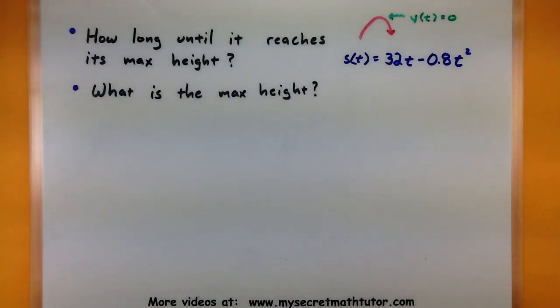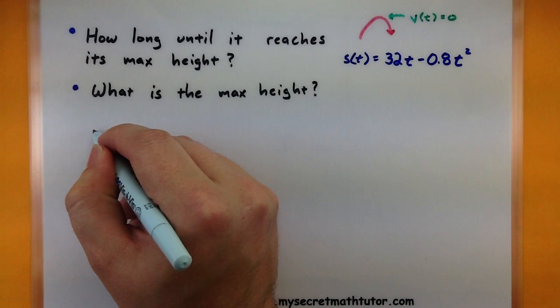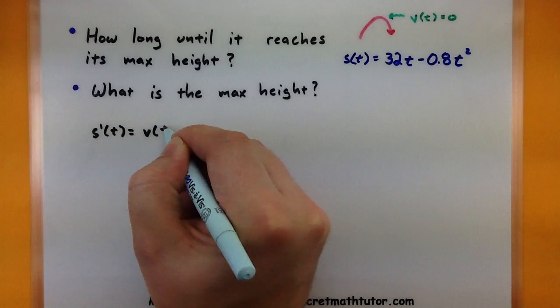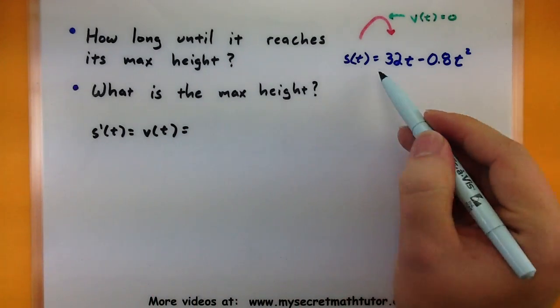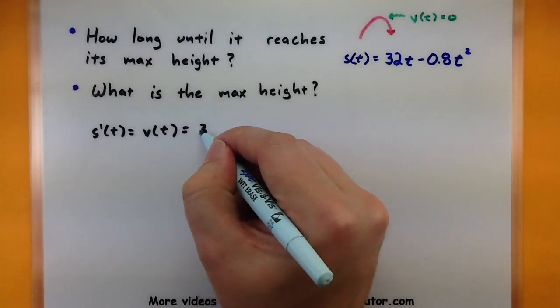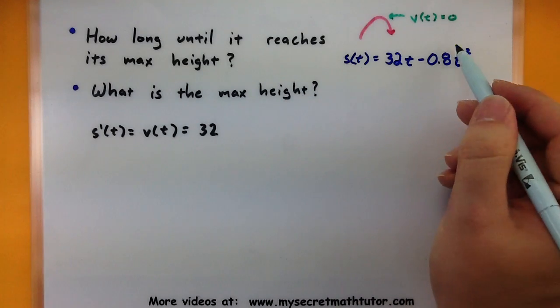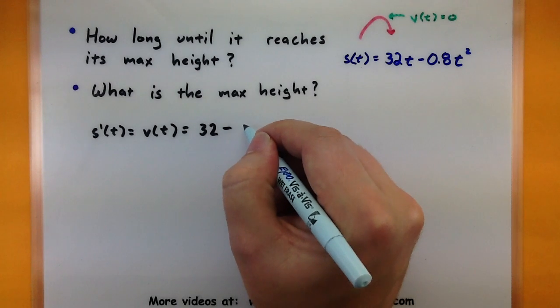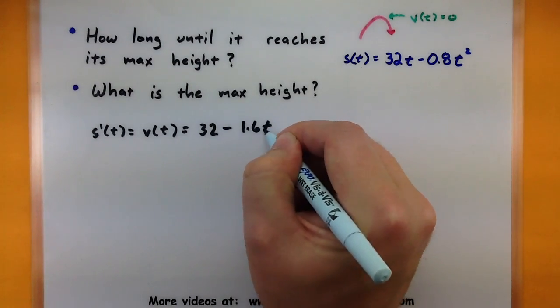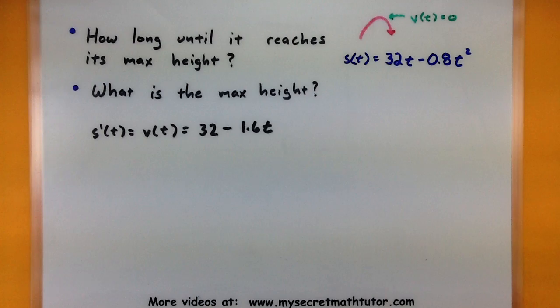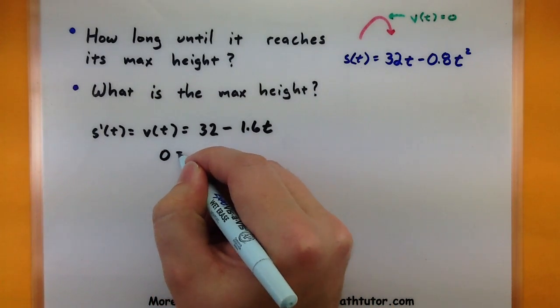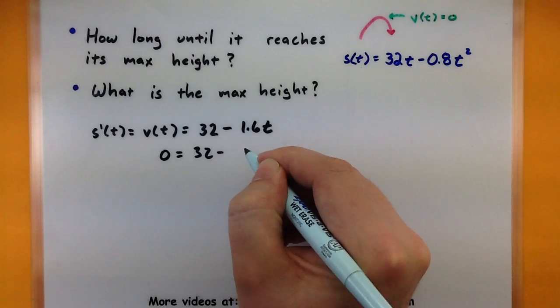The very first thing we need to do is just figure out its velocity. So let's go ahead and take one derivative of our position. The derivative of 32t, that'd be 32. Derivative of 0.8t squared, so bring down that 2. So I'd get a negative 1.6t. I want to know where is the velocity equal to zero, so let's grab this entire thing, set it equal to zero, see what we have.